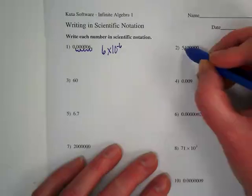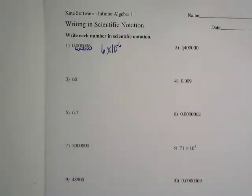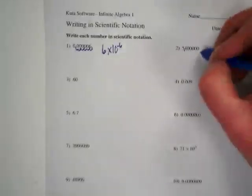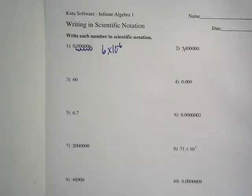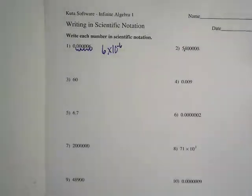We want to get the decimal point here, in between the 5 and the 4. Remember, we want a decimal just to the right of one number, or one number to the left of it. The original decimal point was here. How many places are we moving?